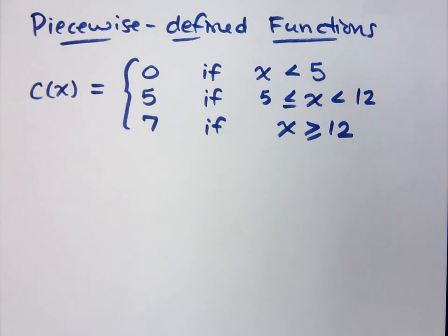Here's an example of a piecewise-defined function. If we're talking about the cost based on somebody's age, have you ever been to a place where the cost is different depending on how old you are? Yeah. So stupid.